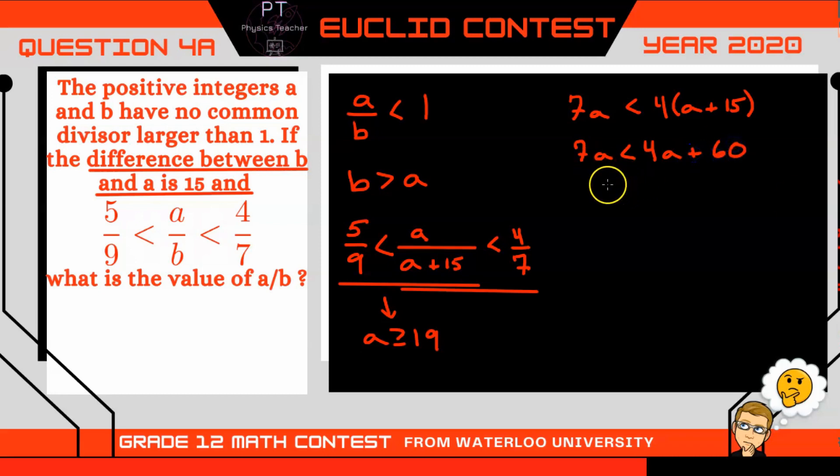Then collecting like terms leaves us with 3A is less than 60, or A is less than 20. Again, since A is an integer, if it's less than 20, that means it is less than or equal to 19.